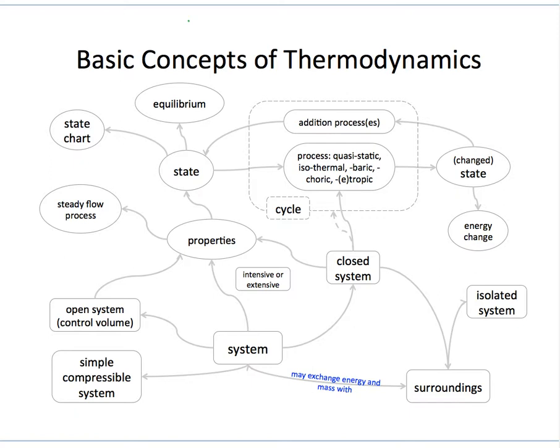For example, here I listed a number of concepts that I think are basic to thermodynamics. System is a concept, and let's say we want to describe the relation between system and surroundings. You think of statements that describe the relationship between system and surroundings. One thing I can think of is: system may exchange energy and mass with surroundings. So that's one step in creating and completing this concept map.